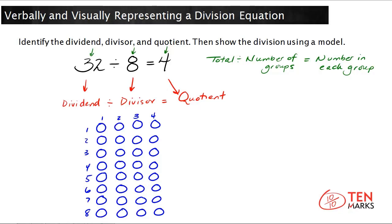You can also double check and make sure that this model definitely has 32 by using multiplication. Remember, you multiply the number of groups by the number in each group to find the total. So let's just double check. Number of groups is 8, number in each group is 4, and 8 times 4 equals 32.